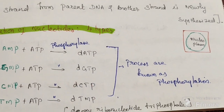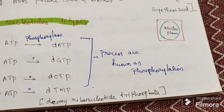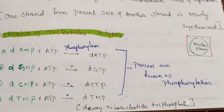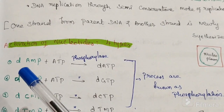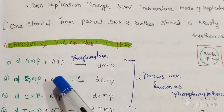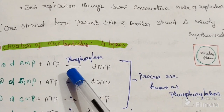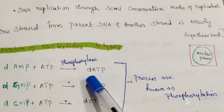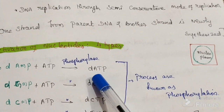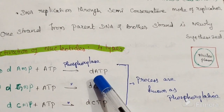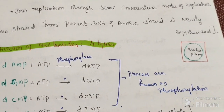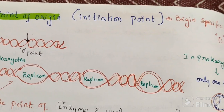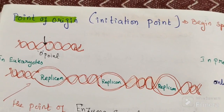Deoxyribose guanosine triphosphate and so on. This process is known as phosphorylation. Deoxyribose adenosine monophosphate combines with adenosine triphosphate with the help of the enzyme phosphorylase to form deoxyribonucleotide triphosphate. This process is known as phosphorylation.